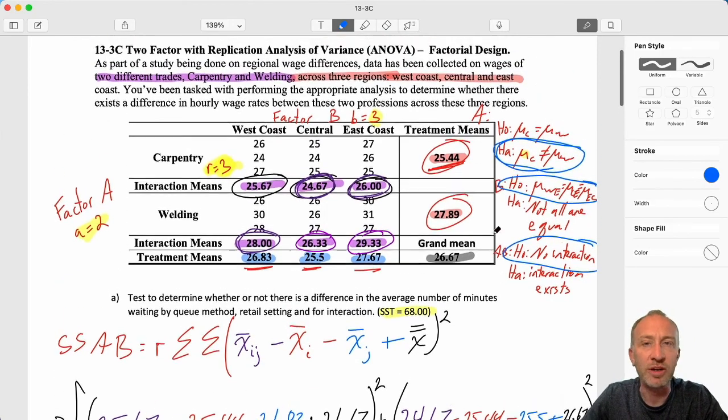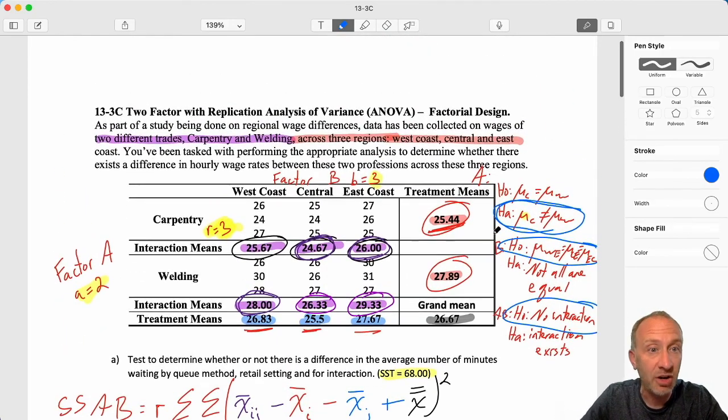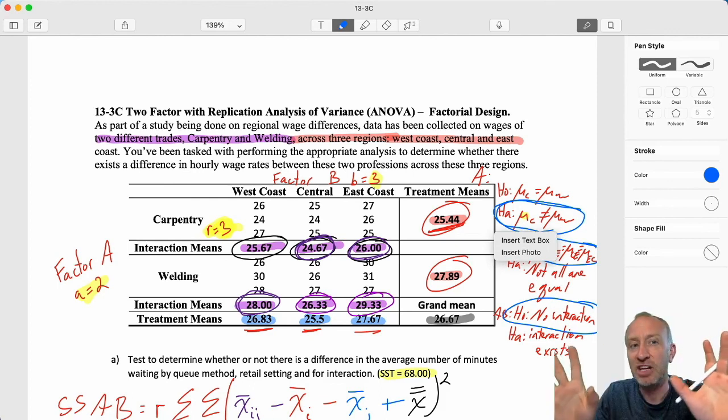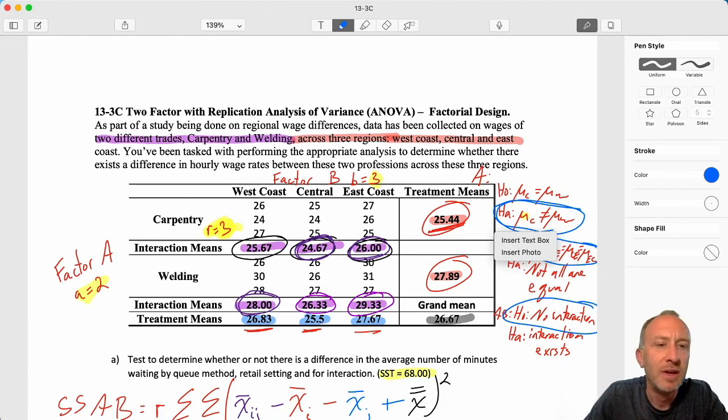That's it. We're done. Module 13 on ANOVA. I hope that this has been helpful. ANOVA is not going away. You're going to see ANOVAs still in Module 14 and 15. They're going to have a different look, but they're not going away. So hopefully this has helped make some sense. Thanks for watching, everybody. Take care. Bye-bye.